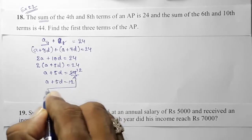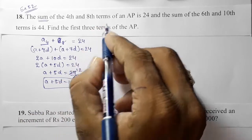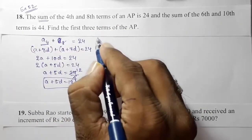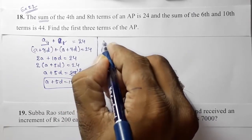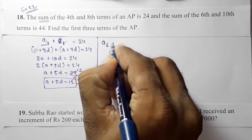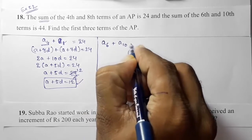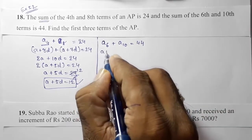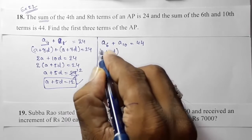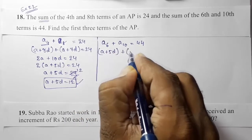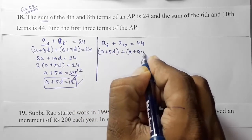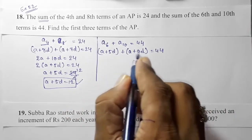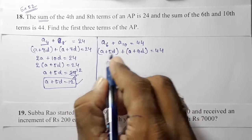Now from the second condition: the sum of the 6th and 10th terms is 44. So we add the 6th and 10th terms and set them equal to 44. The 6th term is a + 5d and the 10th term is a + 9d.